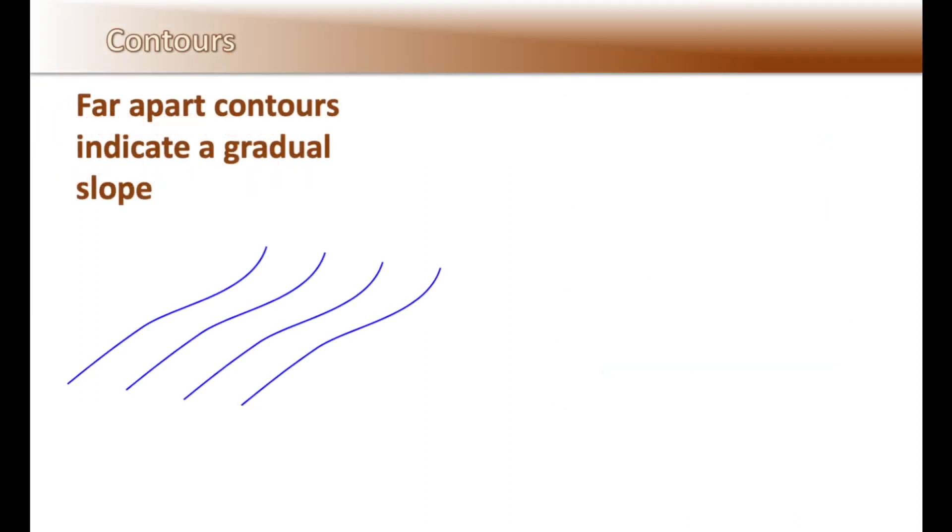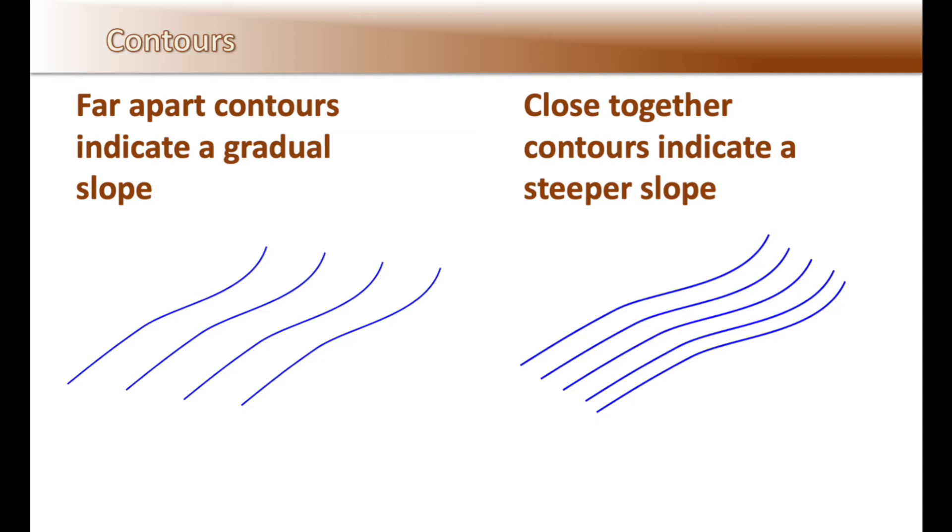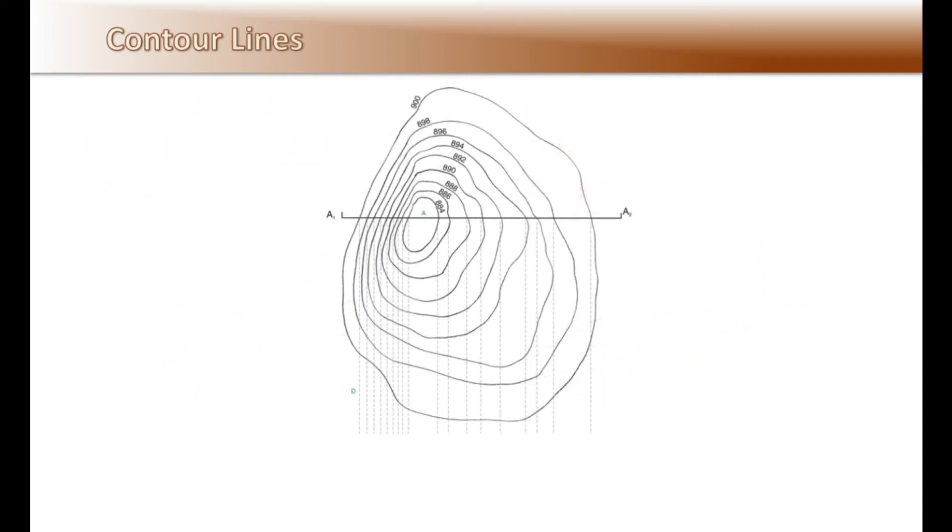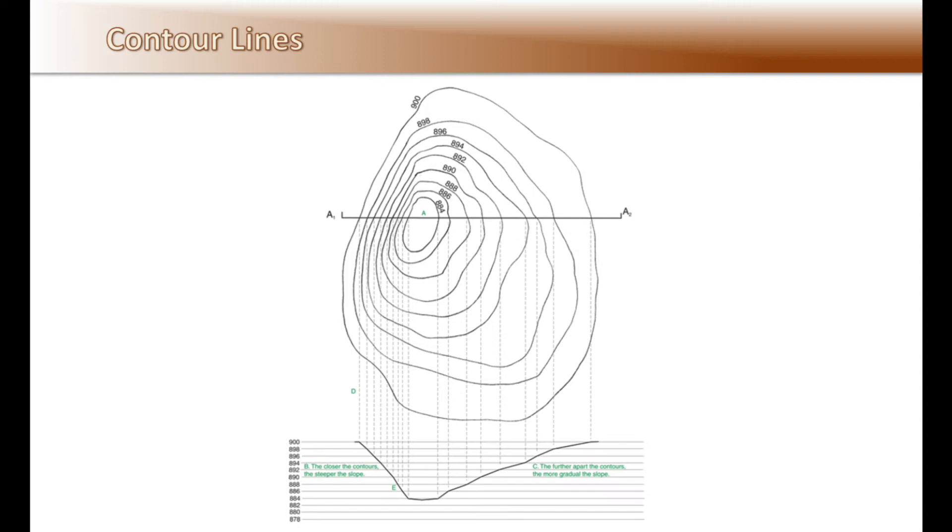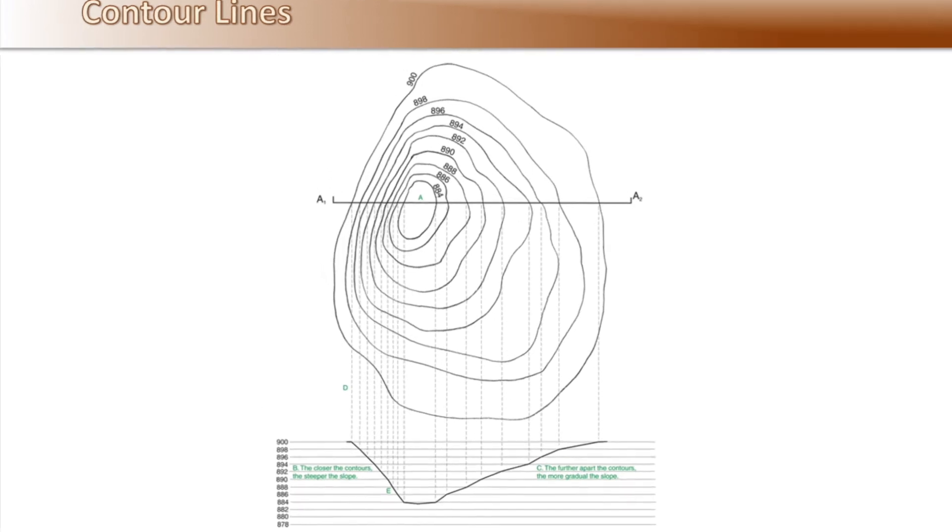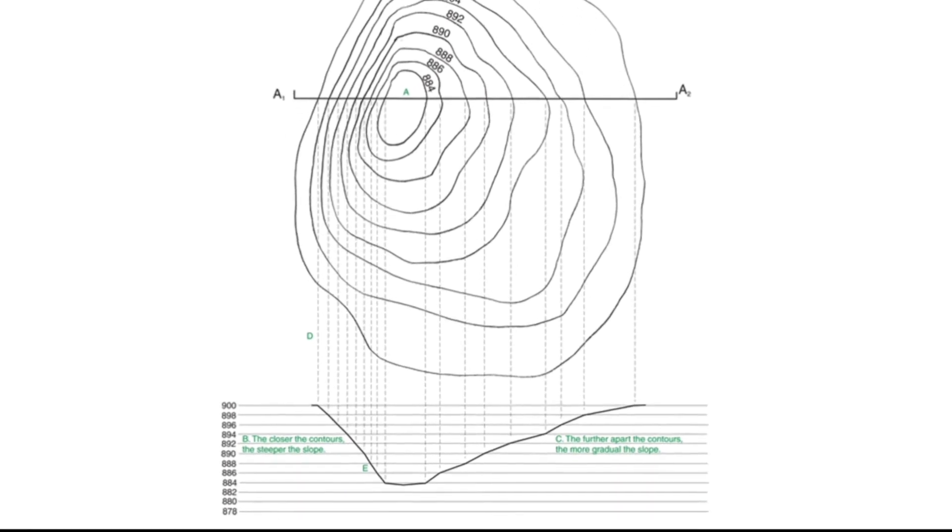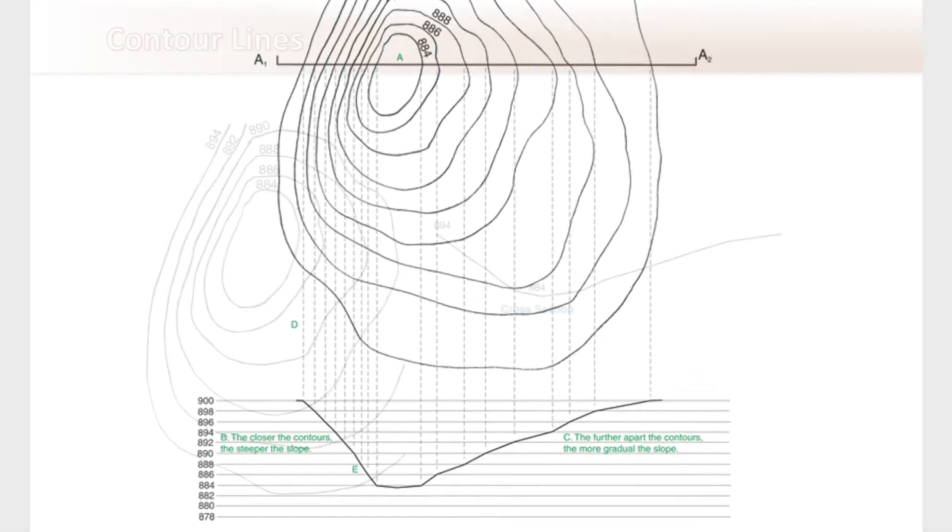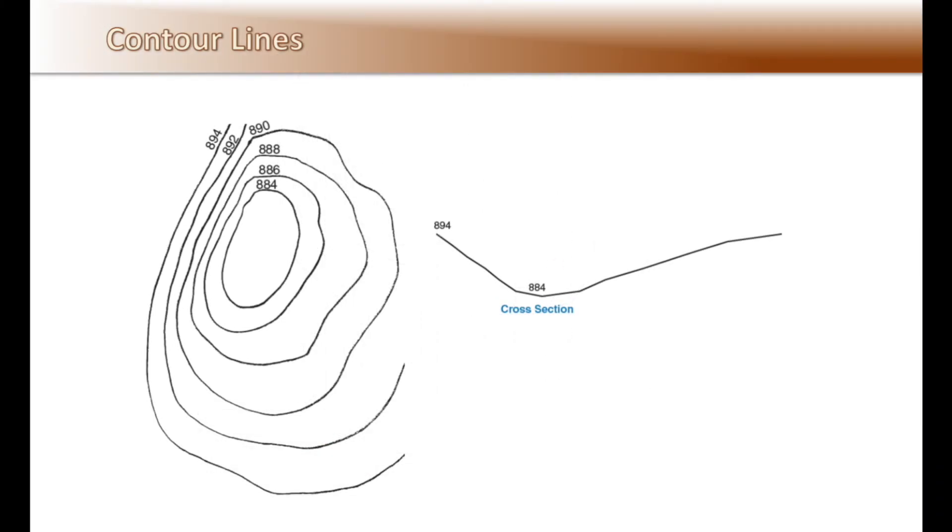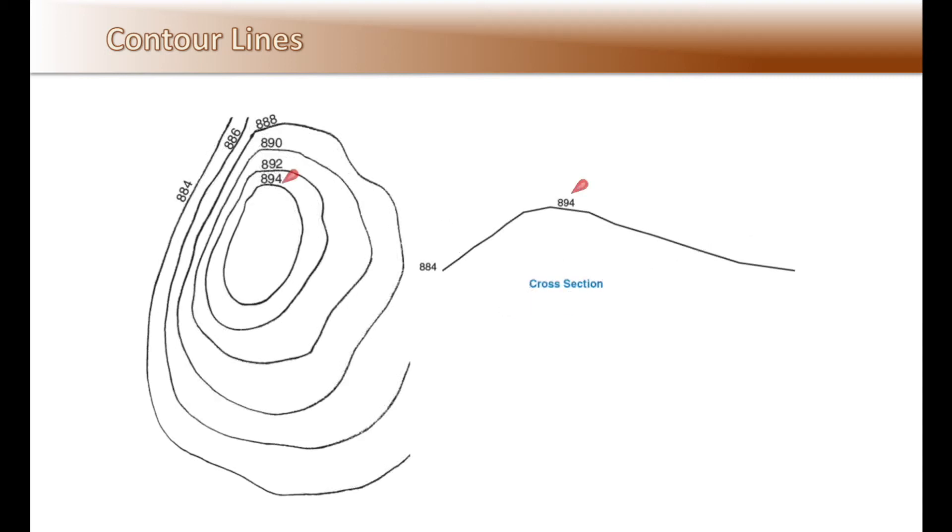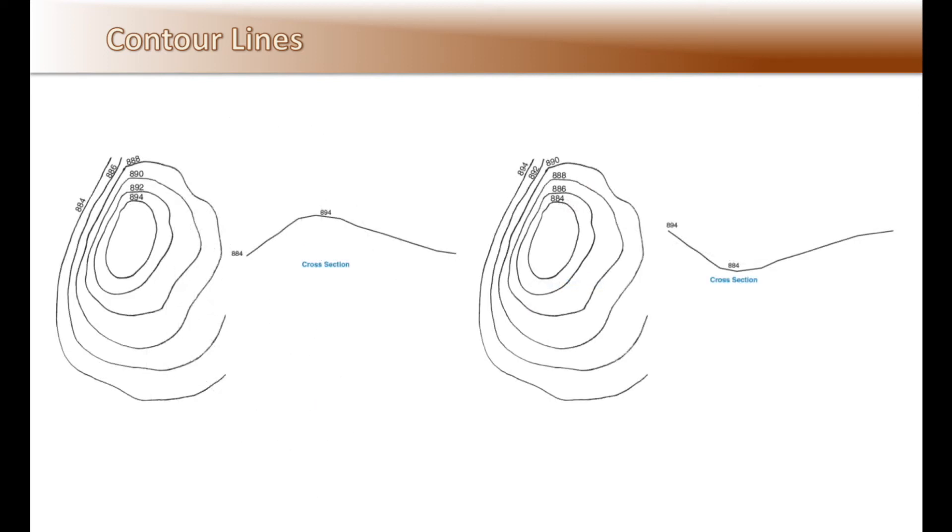The distance between contour lines indicates slope. Contour lines that are far apart indicate a gradual slope of the land, and lines that are closer together indicate a steep or steeper slope. Note how the contour lines are close on the left side and further apart on the right side. When plotting the lines down into a cross section, you can clearly see how the lines that are closer together are steeper than the lines that are further apart. Also note how the contour elevation numbers will indicate whether the land is sloping down or up. As seen here with the same contour shaped lines and the reversing of the numbers changes the layout of the land.